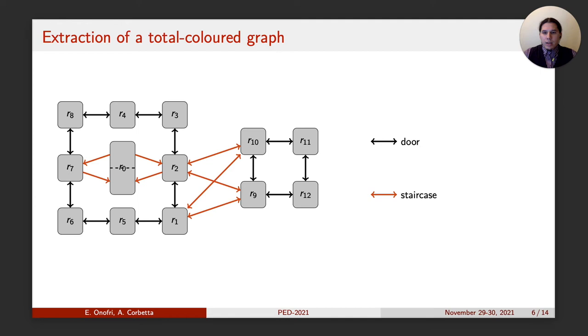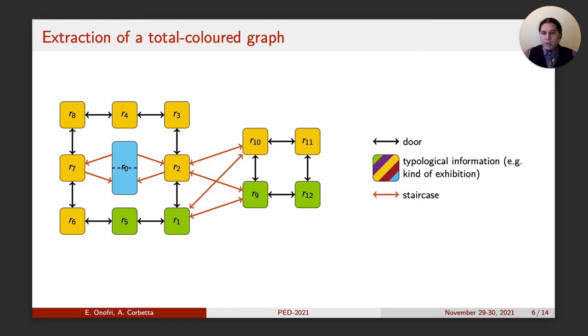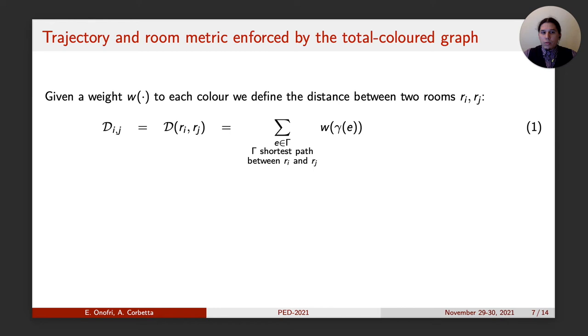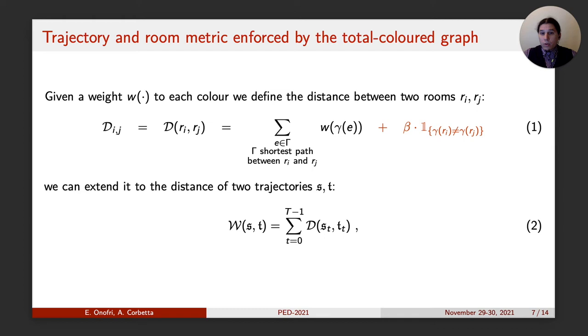In the same fashion, however, we can also inject concept information about different kind of rooms, like rooms holding the standard temporary exhibition, or for example, the ticket office. Since we have a graph, it is natural to think of the distance between its nodes. In particular, we can define the distance between two rooms as the weight of the shortest path connecting them, keeping in mind that each edge is weighted according to its color, so that traversing a door will contribute much less than climbing a staircase. In particular, we can also consider a penalty factor of beta if the two nodes do not share the same color. We can of course extend this definition to trajectories in a Wasserstein-inspired manner, by evaluating the distance of the rooms they are made of, time bin by time bin.